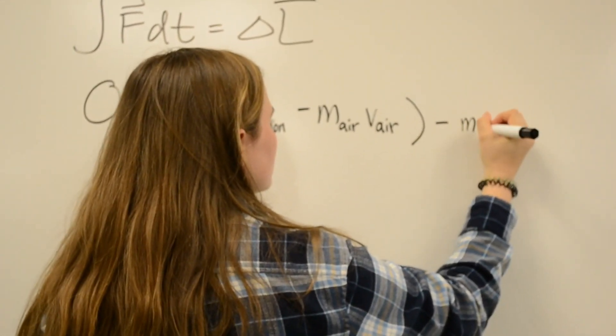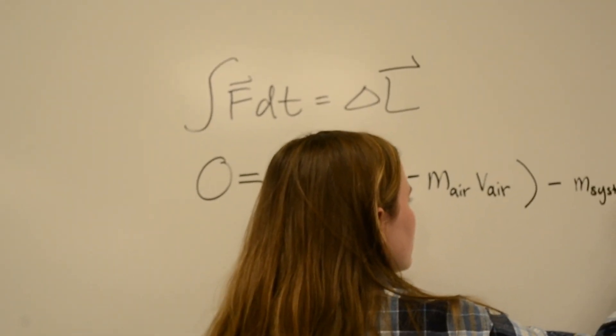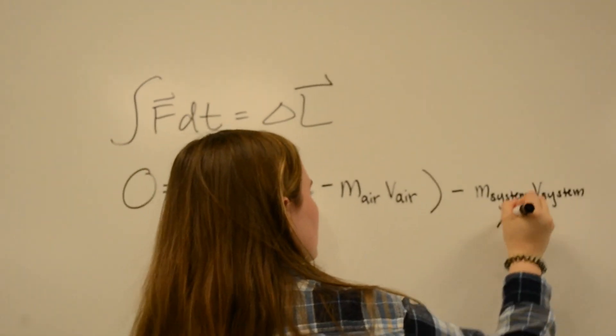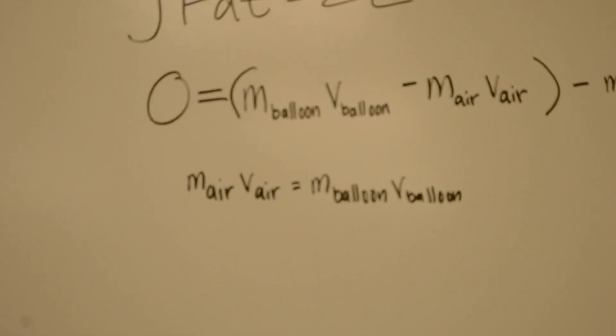Now we can find that the momentum of the balloon after release is equal to the momentum of the air after release. In this case, we saw that momentum was conserved, but you can use these ideas in ways of analysis to any system in motion.